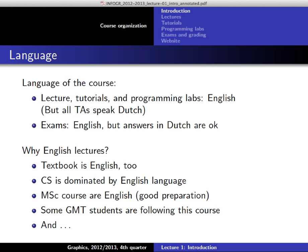There are a couple of reasons for teaching in English. First, the textbook is in English, which may make it easier to understand the content when lectures are also in English. In general, a lot of computer science literature is in English because it's a field dominated by the English-speaking population. If you get a computer science degree, you should be able to read the common literature, which is mostly in English. Another reason is that most master courses, especially in the GMT master, are given in English as it's an international master — good preparation for you if you continue to a master here.